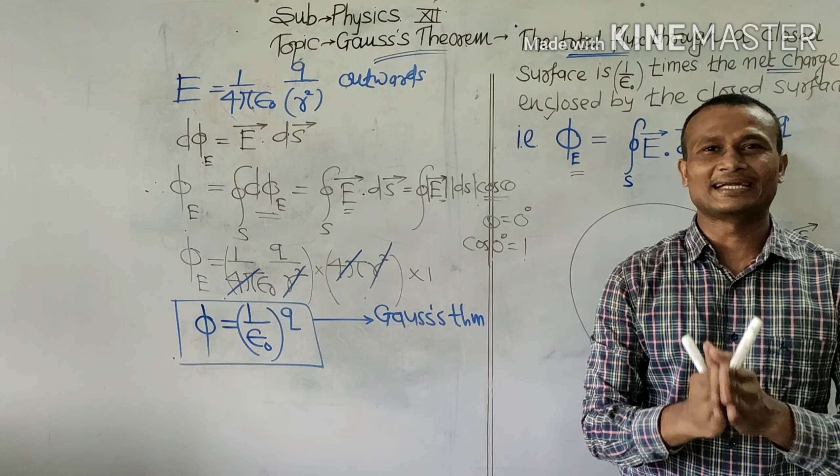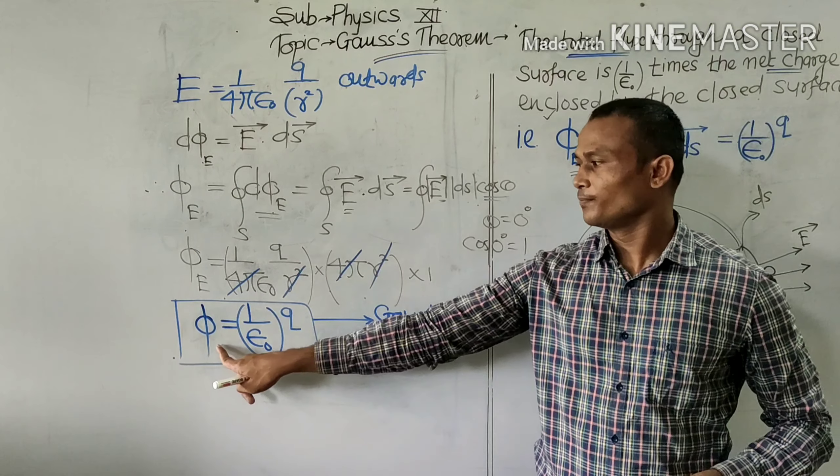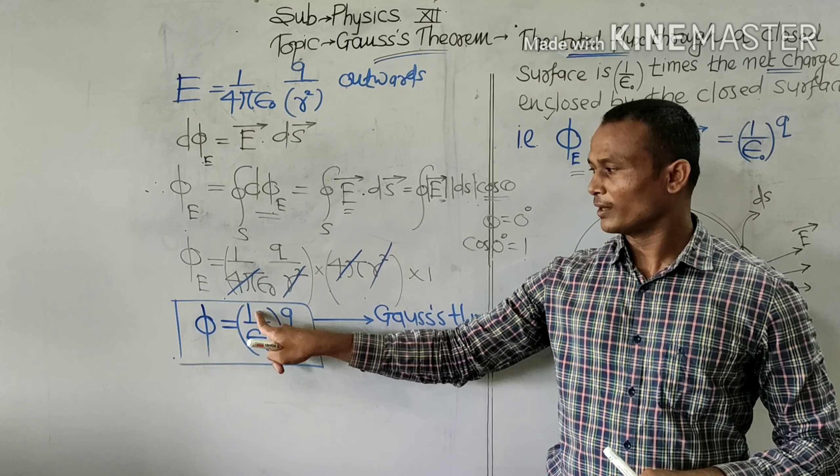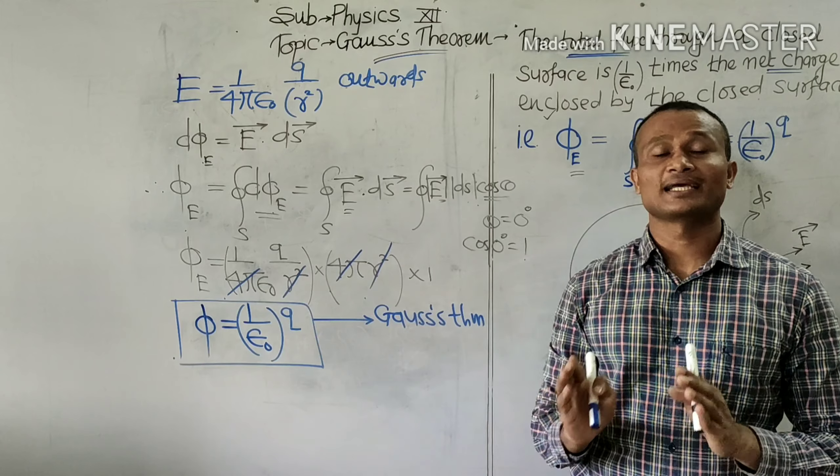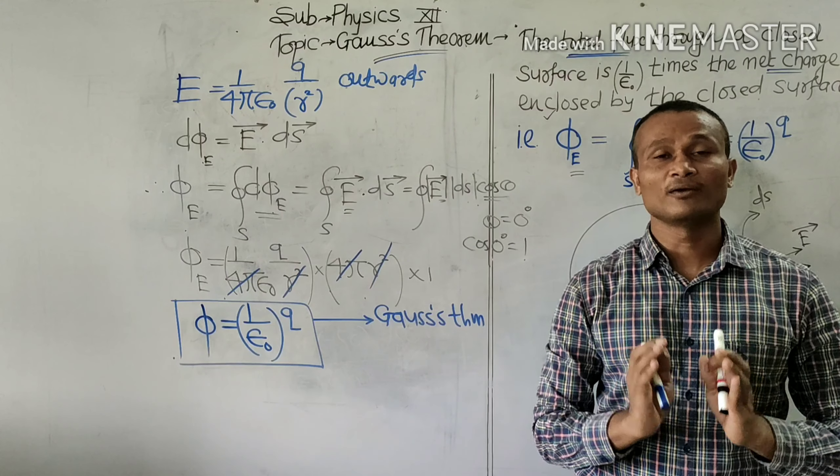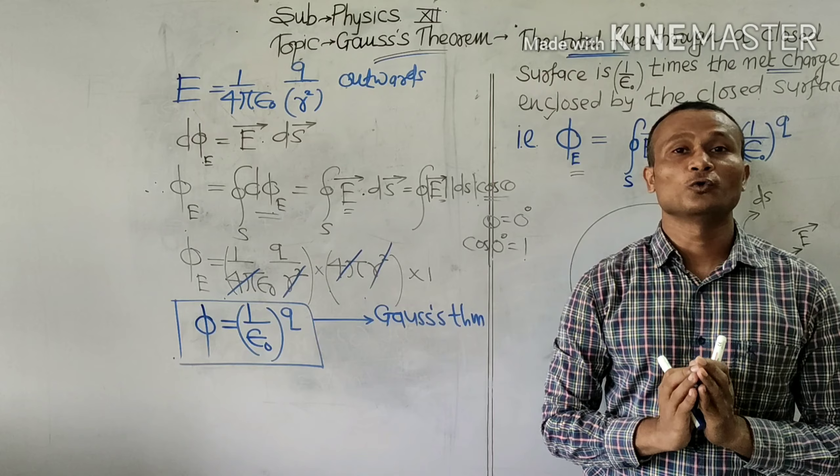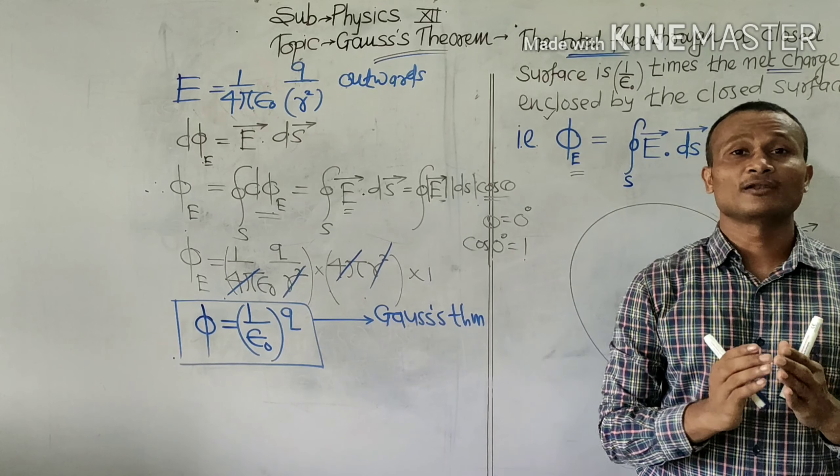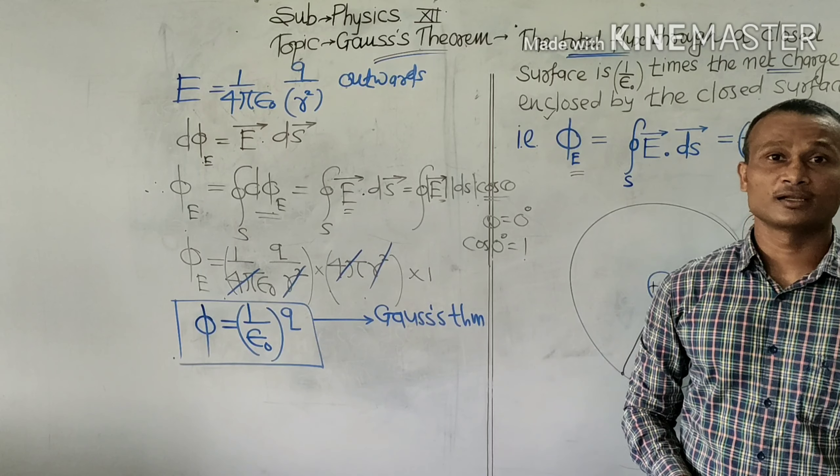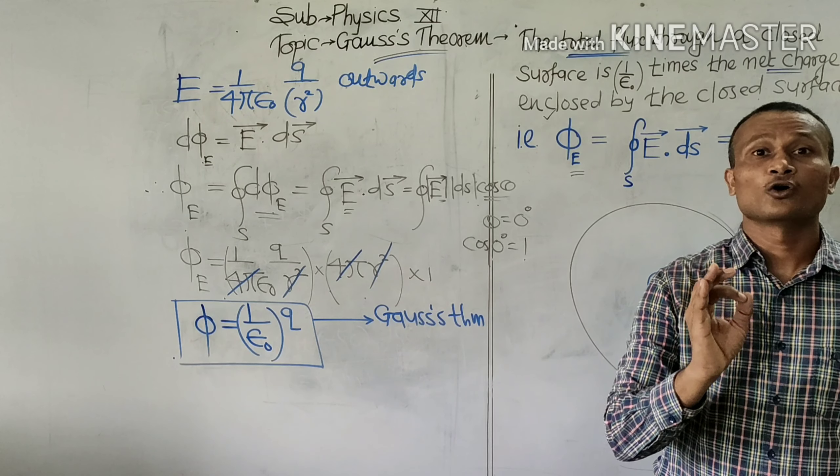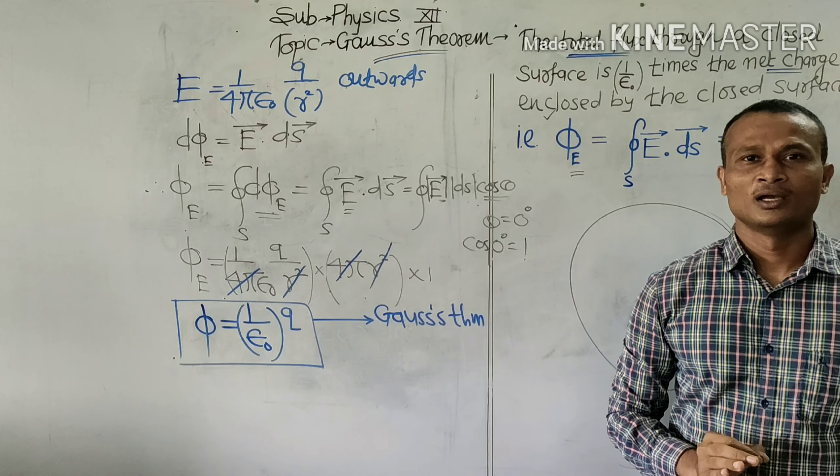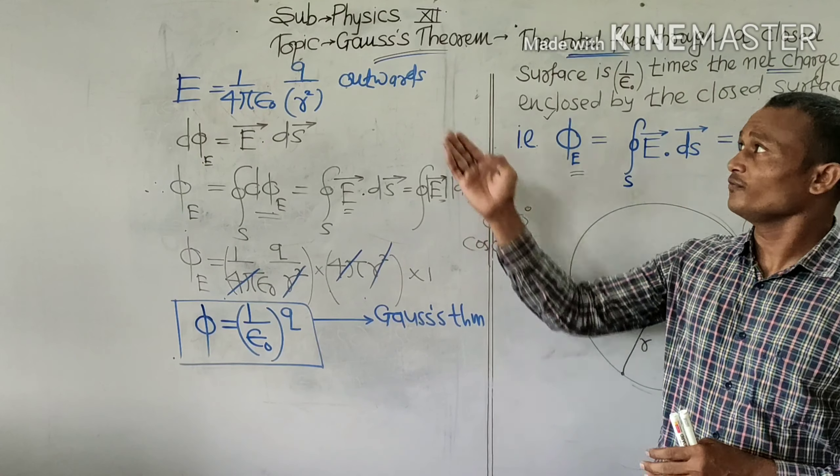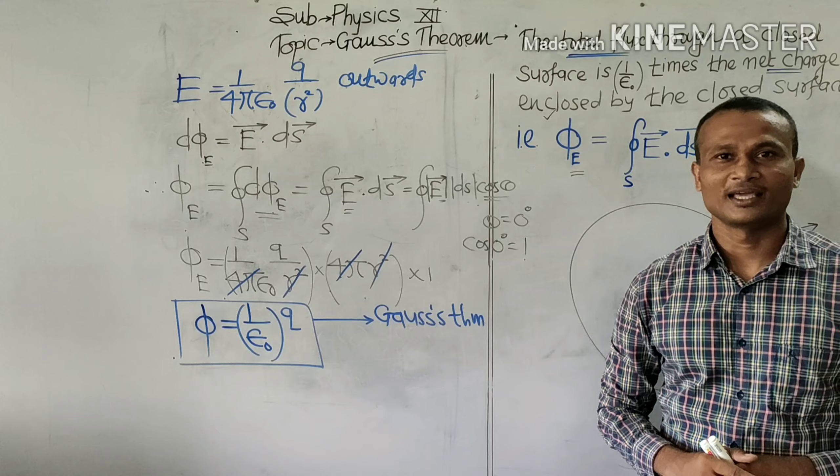Once again, let us state Gauss's theorem. The flux passing through a closed surface is 1 by ε₀ times the charge enclosed by it. Remember one thing, Gauss's theorem is applicable to only enclosed surfaces. Moreover, the surfaces which follow Gauss's theorem, we call them Gaussian surfaces. In next class, we are going to learn various applications of Gauss's theorem. Thank you.